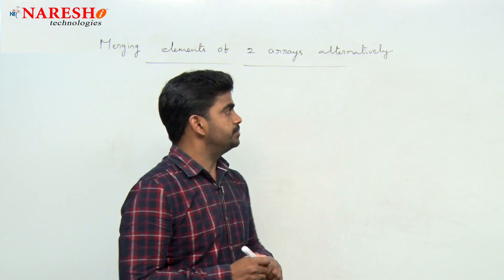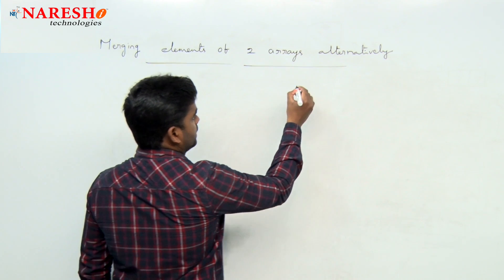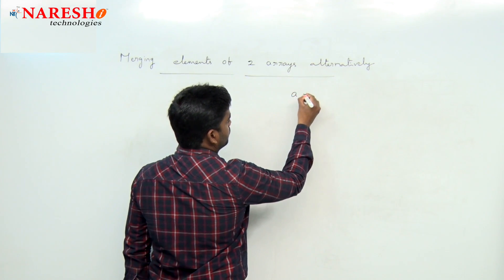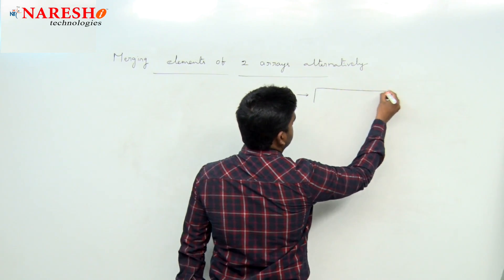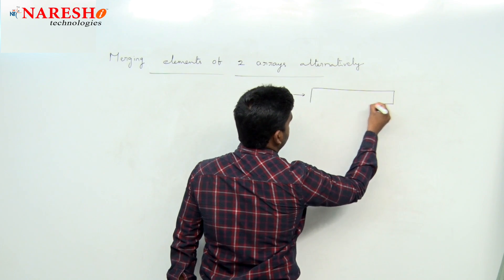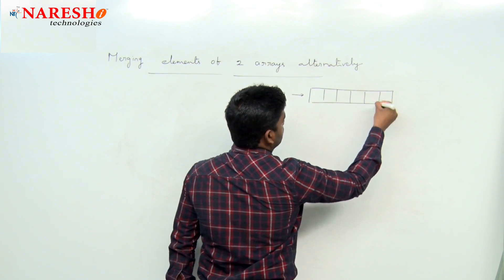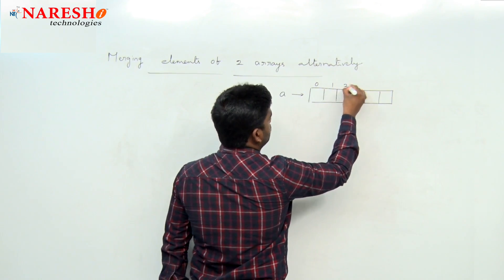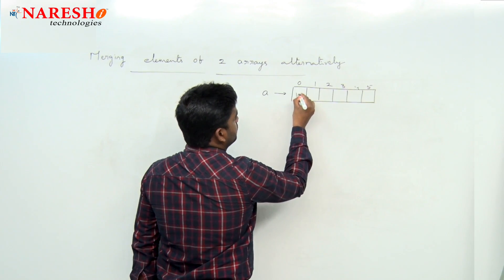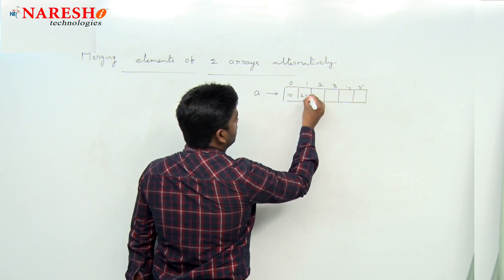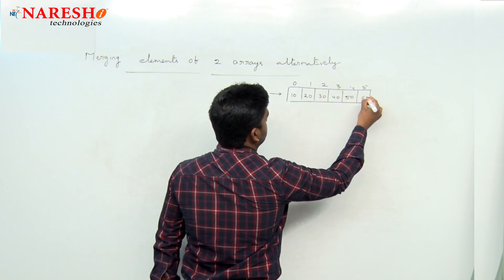For example, we are taking one array 'a' with size 6, indices 0 to 5, and elements: 10, 20, 30, 40, 50, 60.